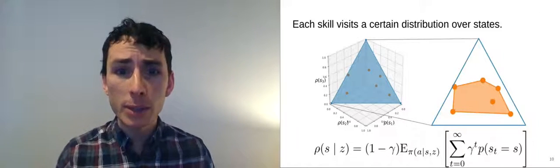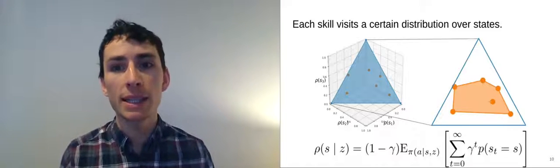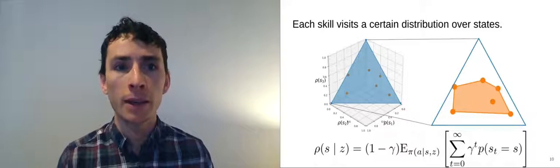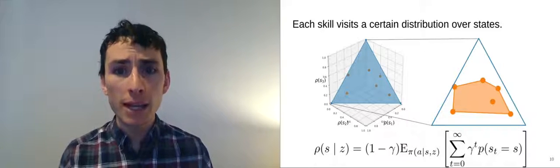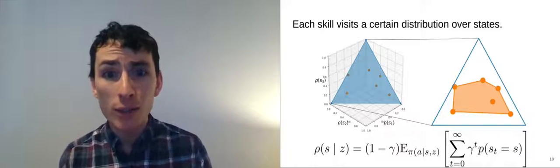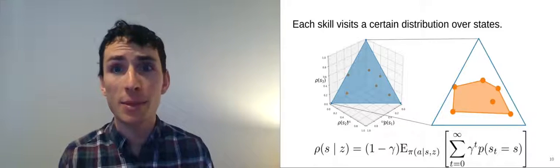The orange region here is really important. This is the set of feasible state distributions. I'll refer to it as the state marginal polytope. This polytope is important because it reflects the dynamics of the environment. Some states are easy to visit, some states are hard to visit. The agent can't spend all its time at some states.